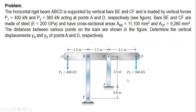In this video, I'm going to solve another problem on simple strain. The horizontal rigid beam EBCD is supported by vertical bars BE and CF, and is loaded by vertical forces P1 equal to 400 kN and P2 equal to 360 kN, acting at points A and D respectively.